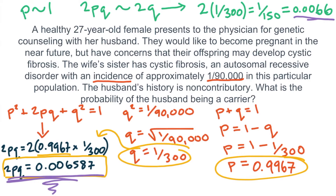In summary, if you see a problem like this on Step 1, first take the square root of the incidence — in this case 1 over 90,000 — then multiply by 2. This gives you the carrier frequency: 1 over 150, or 0.0066. The math really is not that complicated using this shortcut; it only requires two simple calculations. On the bottom of the screen I've shown the complicated math, and on the top in green I've shown the shortcut.